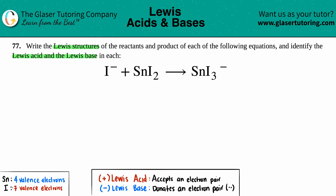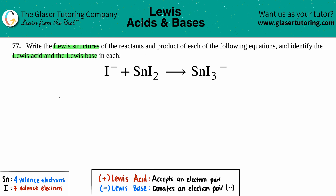The only new thing here is identifying which one is the Lewis acid and which one is the Lewis base. I've written down the number of valence electrons that tin and iodine need. So let's go for it.